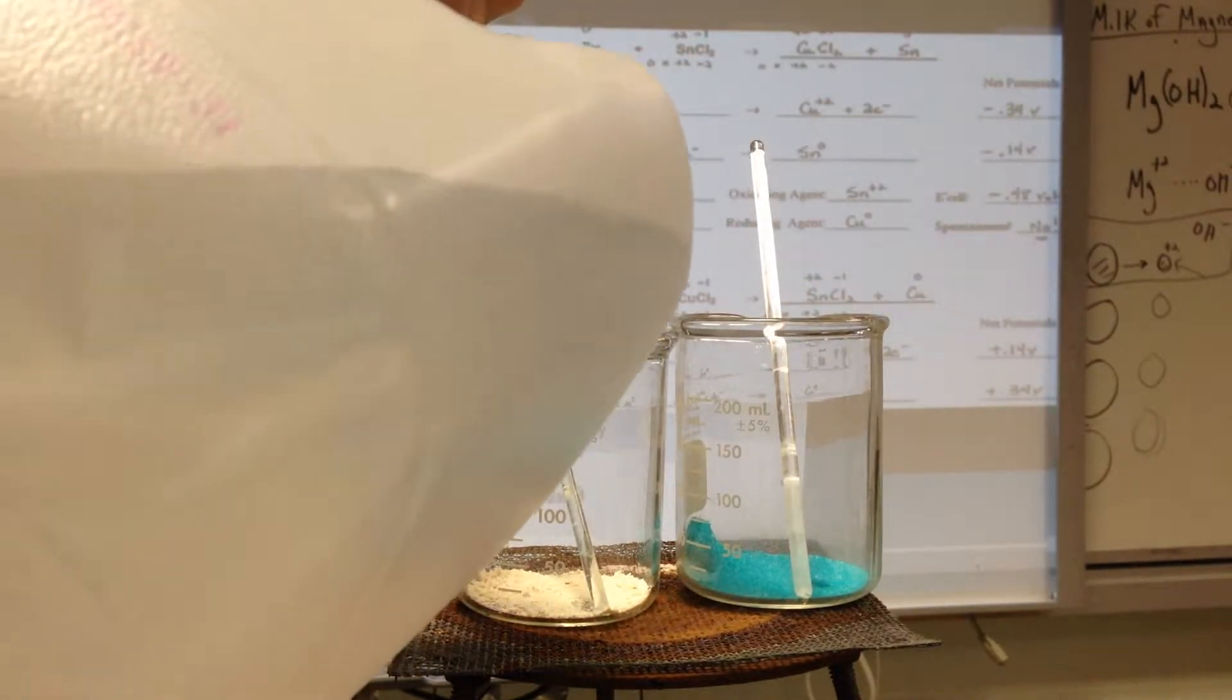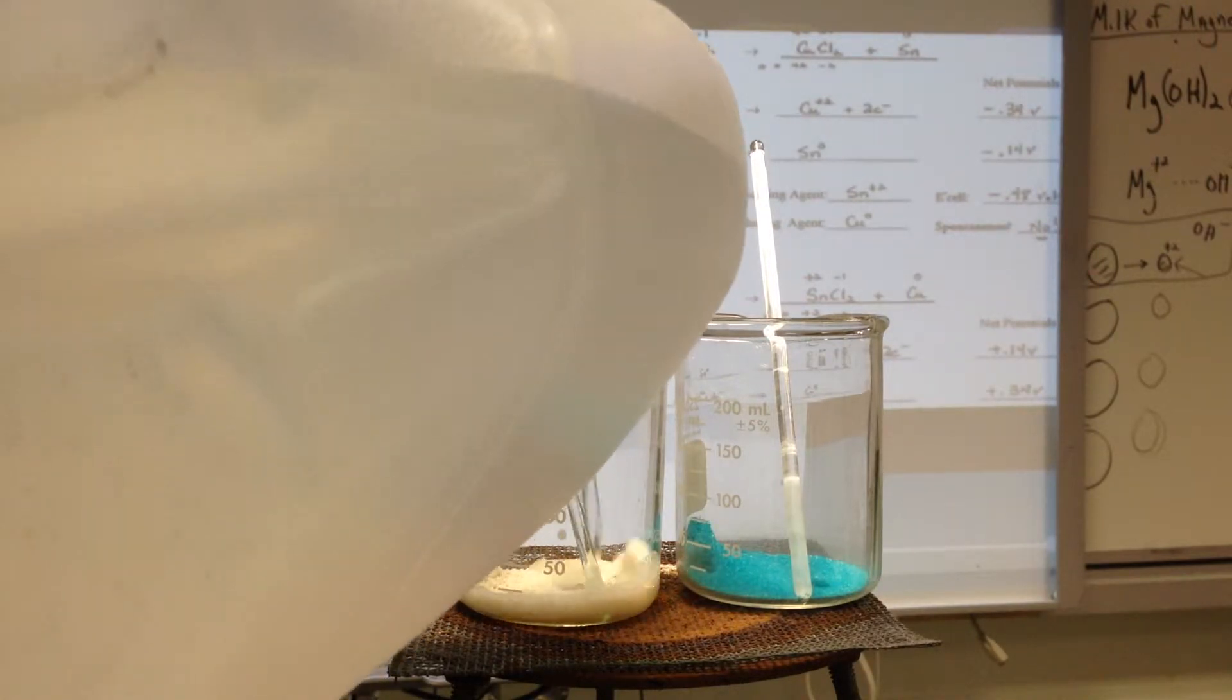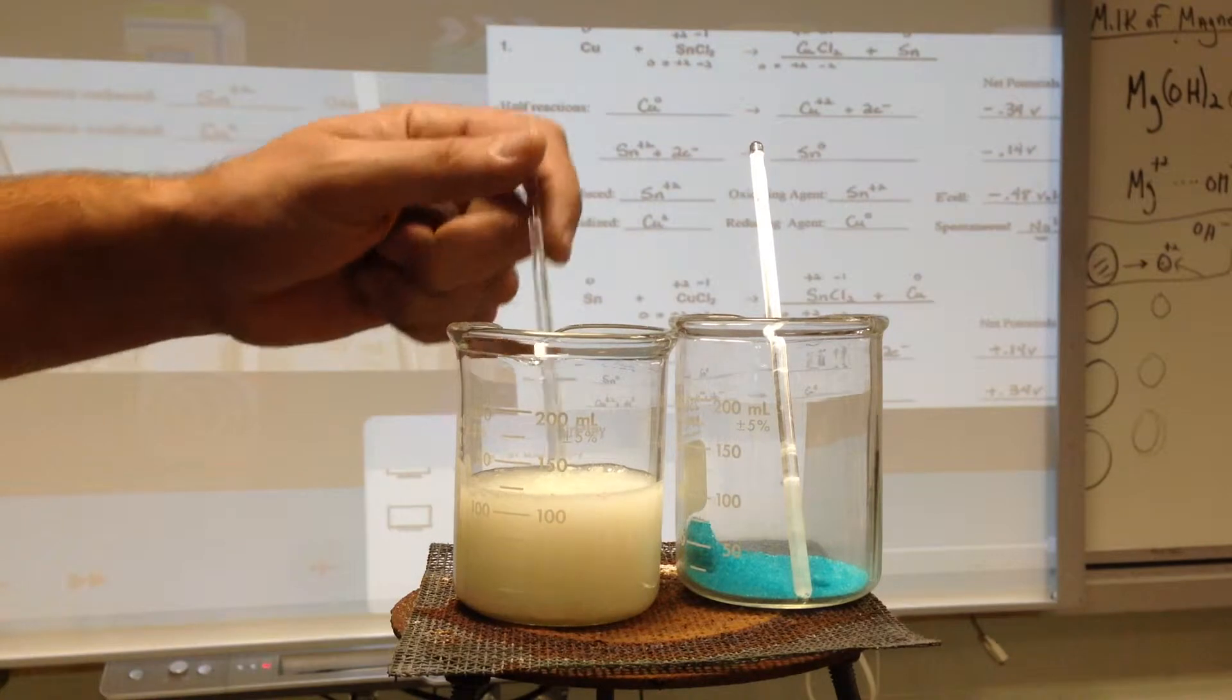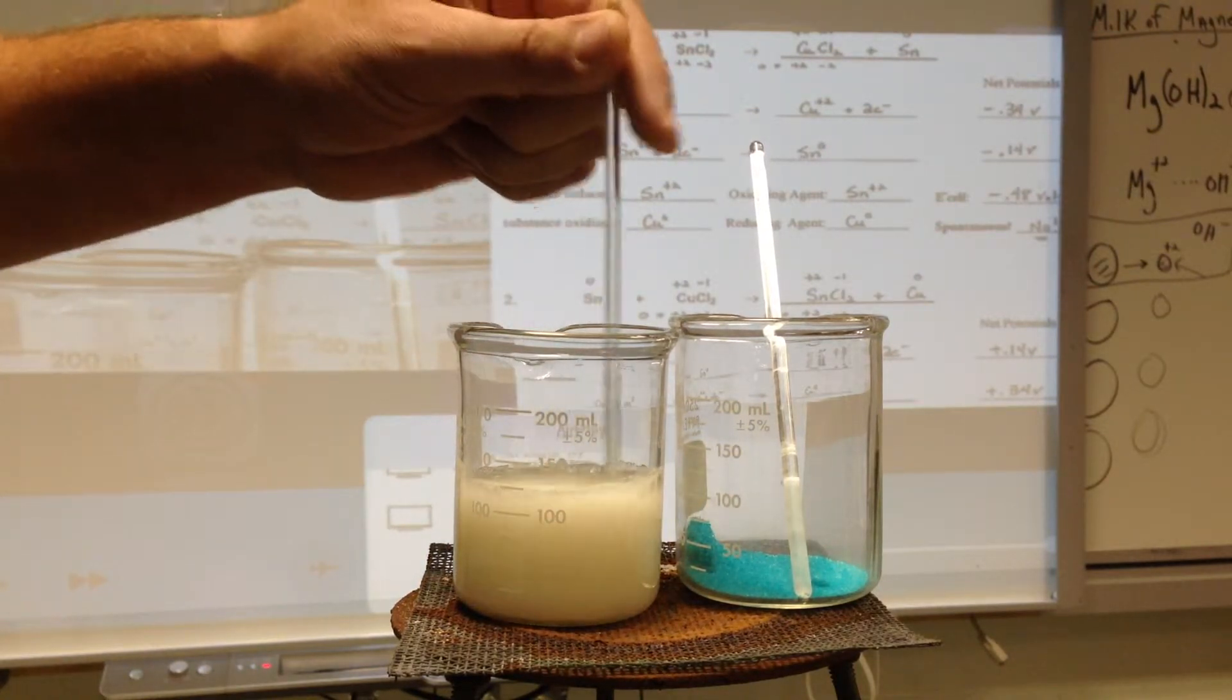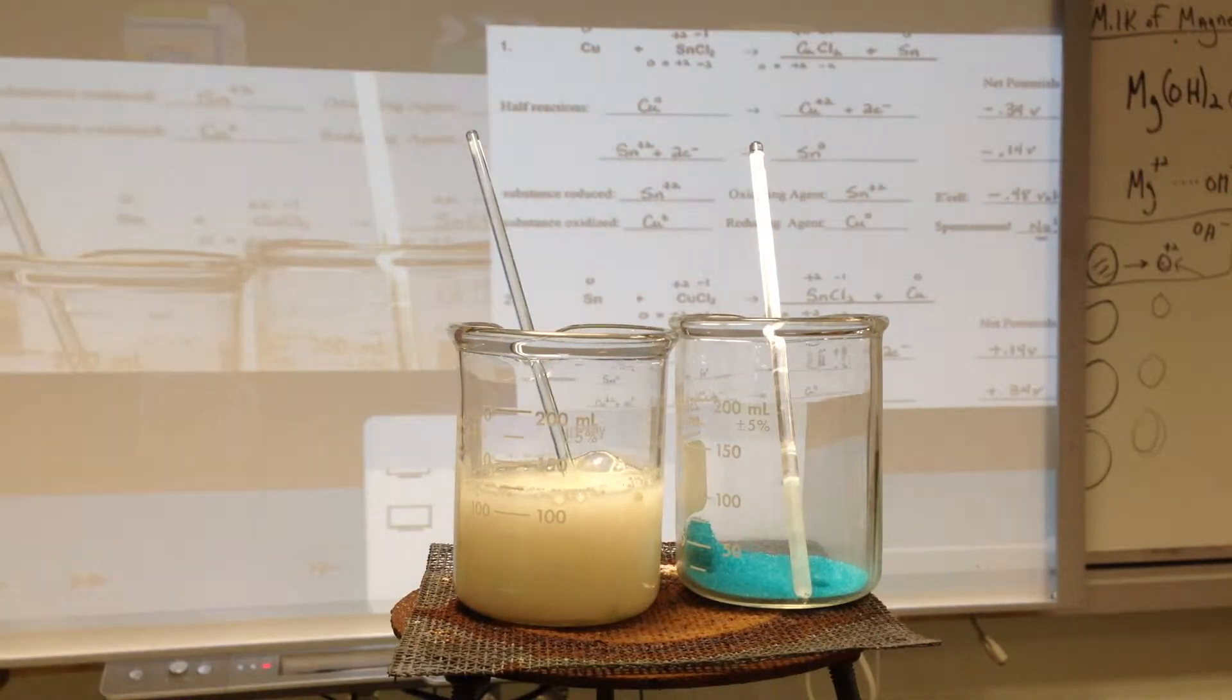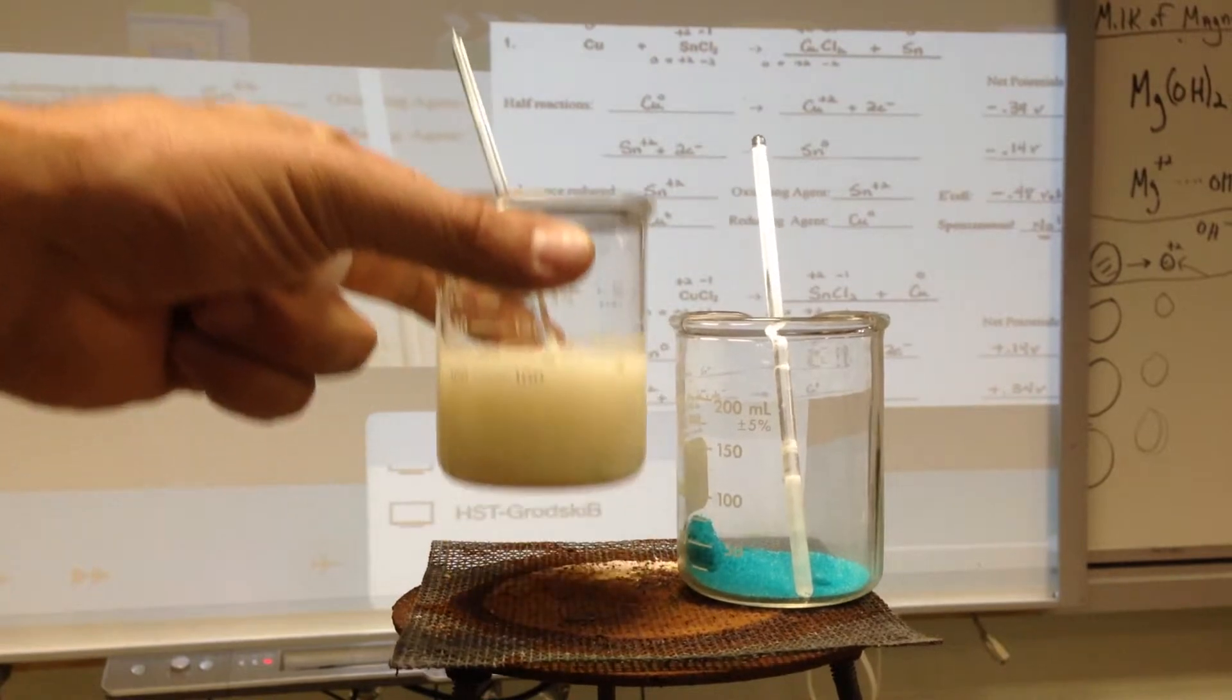I have tin chloride, which isn't very soluble, so it's going to make a milky solution. It's a colloid. It's not really going to dissolve, but there's some dissolving going on. I've got tin plus two in the beaker to the left, and I know you don't see much of it because it's kind of cut out.